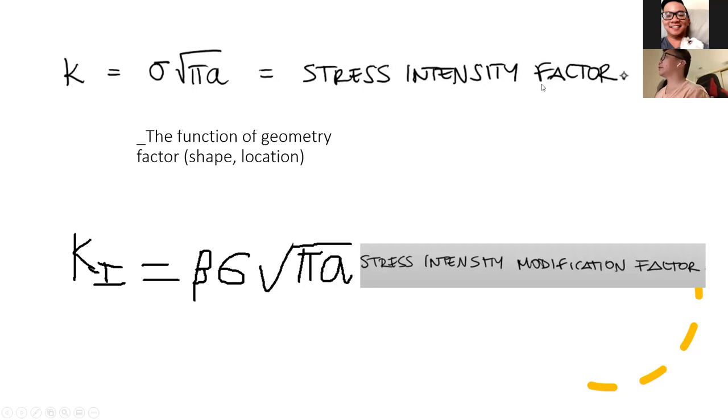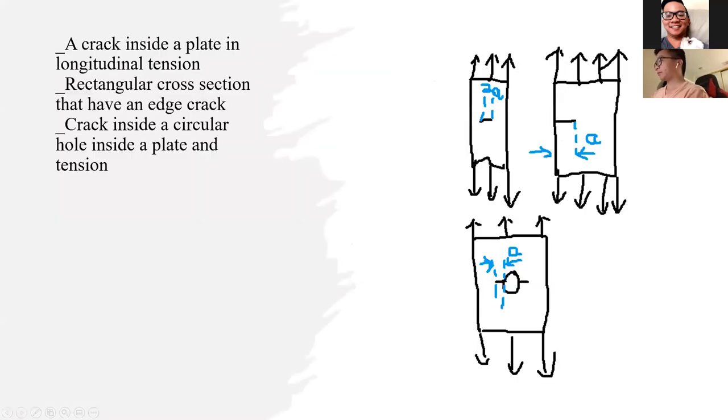Moving on to the stress intensity factor, it's a function of the external stress and the crack plane. The value for this expression will change based on the geometry, shape, or location of a crack. The stress intensity factor is a function of geometry factors such as shape and location. For this, we use the stress intensity modification factor with the formula K_I equals beta sigma times square root of pi a.